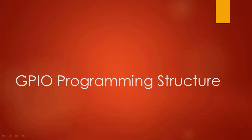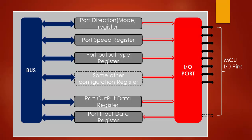GPIO Programming Structure. Remember, each GPIO port is governed by many registers as shown in the figure here. These registers may vary depending upon the vendor who designs the microcontroller. Generally, in the microcontroller a GPIO port is governed by these registers. The minimum set of registers which you find in any microcontroller is the direction register, which is also called a mode register. By using this register you can set the direction or mode as an input, output, analog, etc.